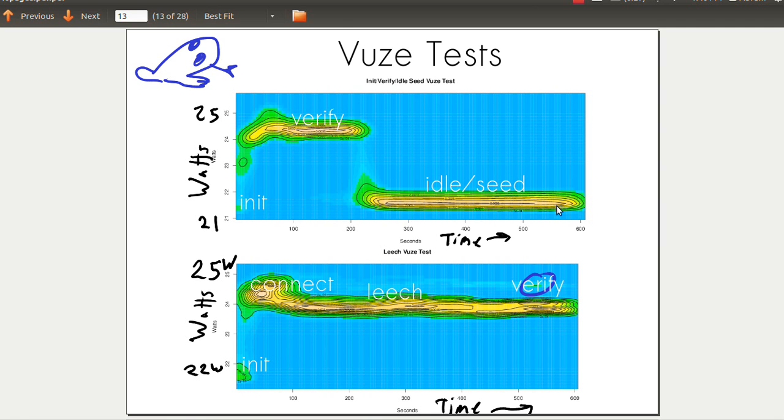But what's concerning is it's above 21 watts, whereas 19 was our base idle. It's using two extra watts per time unit to seed a file. It's not really doing anything - just waiting for connections. Whereas if it does download or seed the file, it uses a lot more.